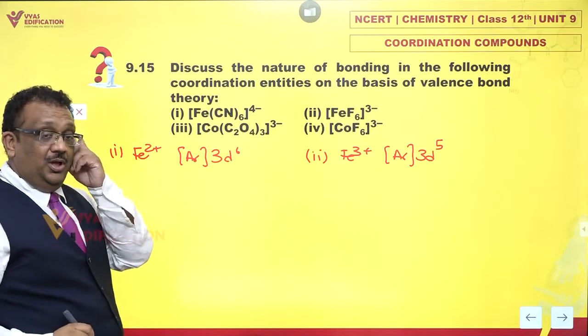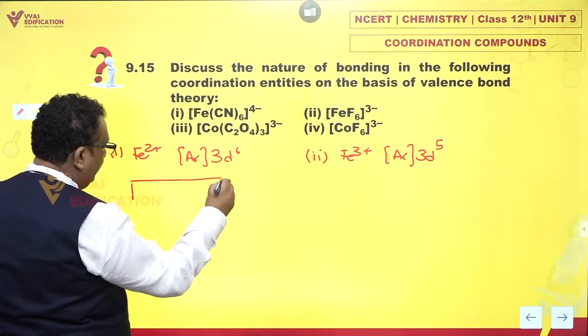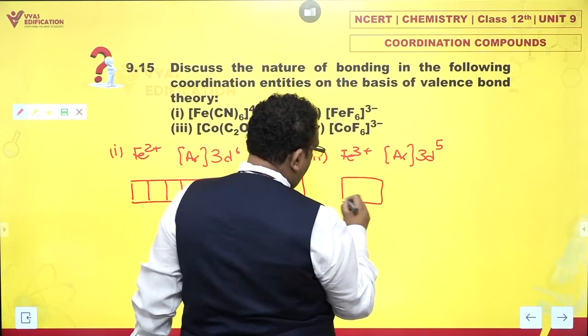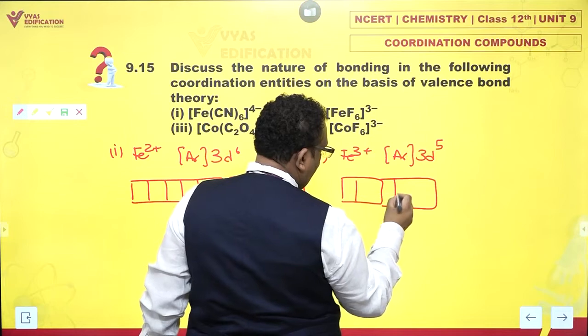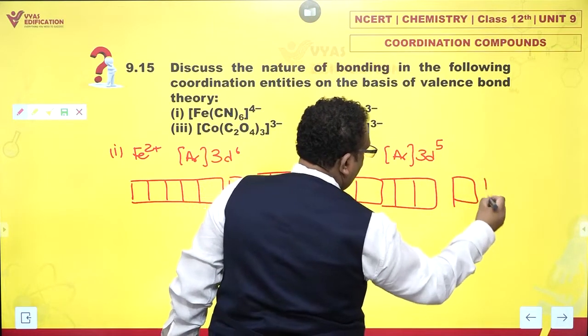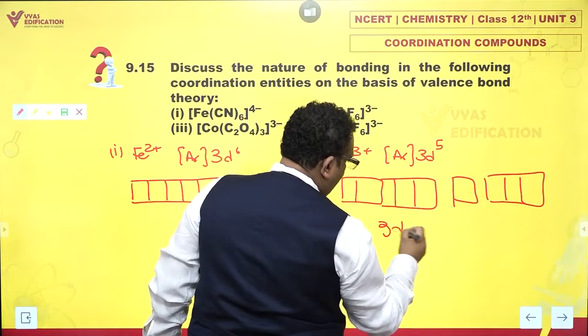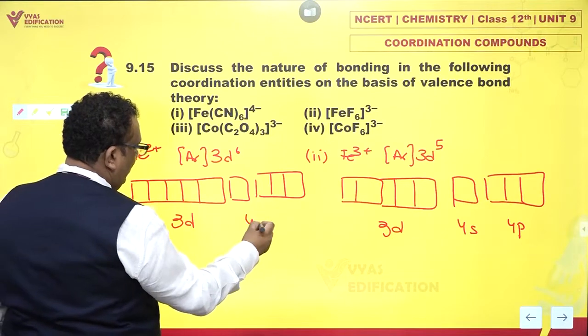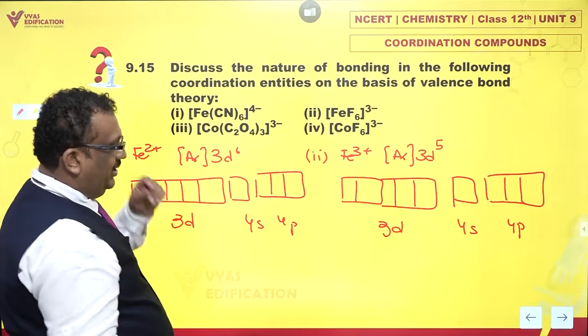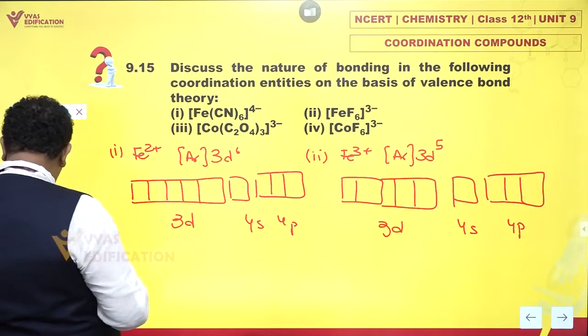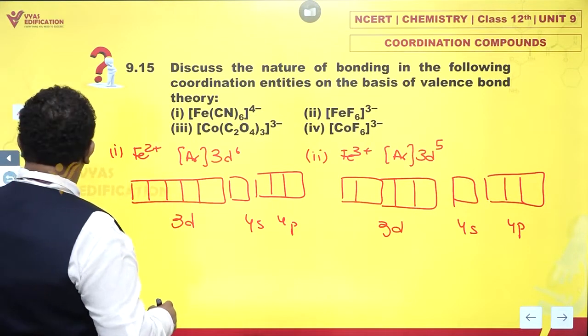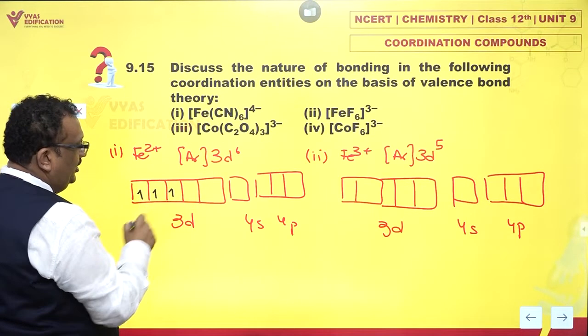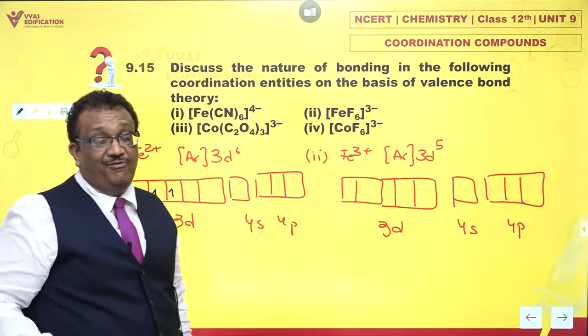Now what should I do? I must write down the box diagram. This is 3D, this is 4S, and this is 4P. If I have 6 electrons here, 1, 2, 3, now 4, 5, 6. How do I fill up these orbitals?